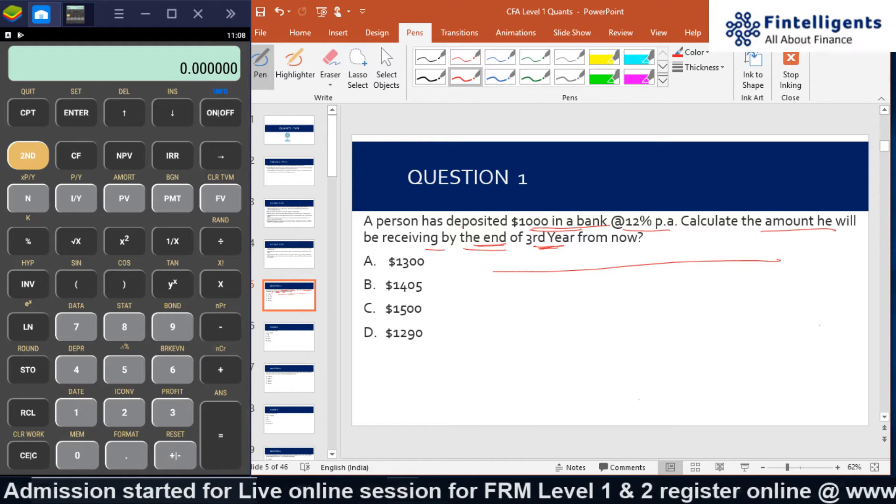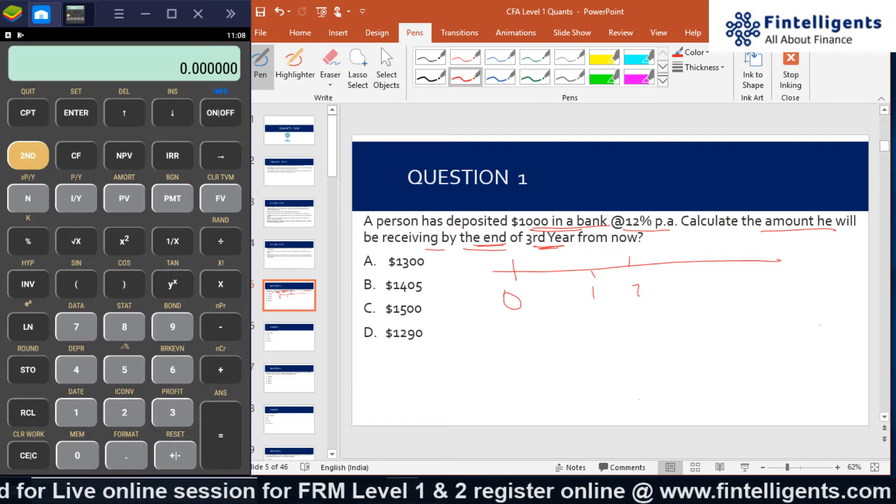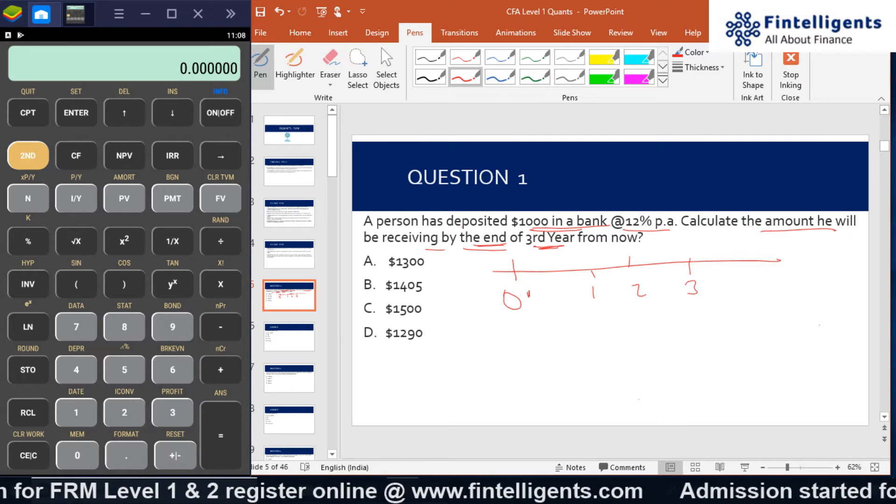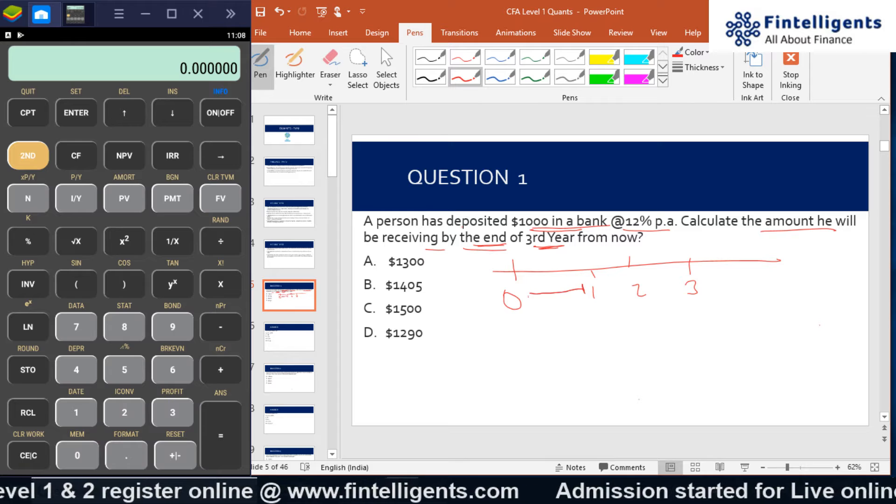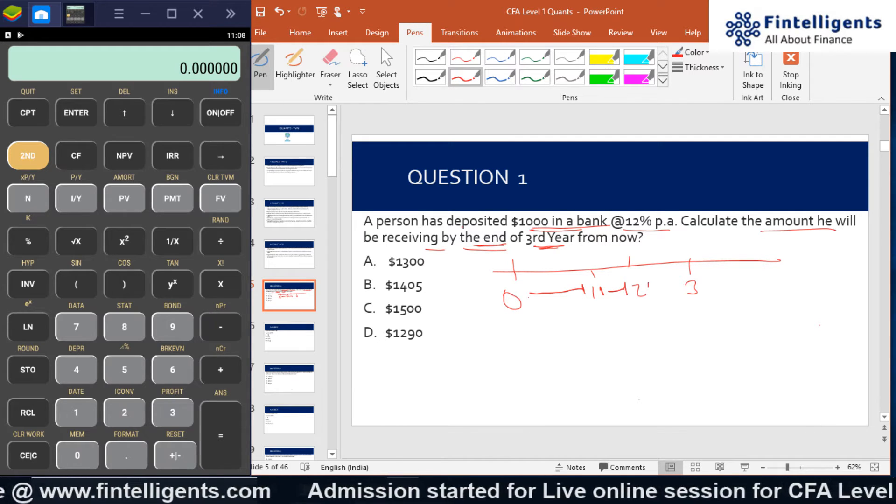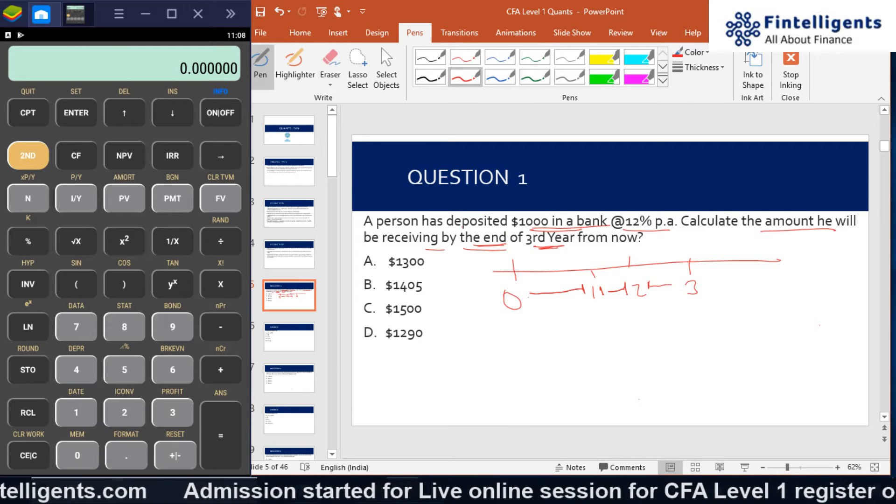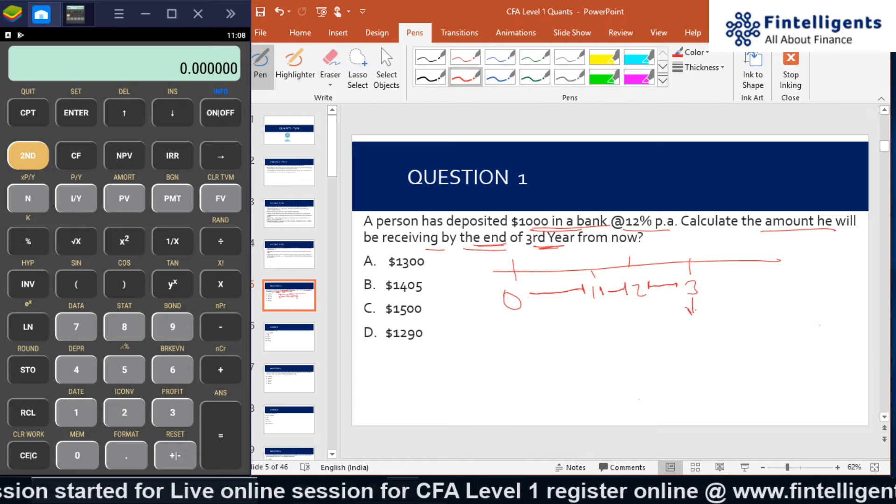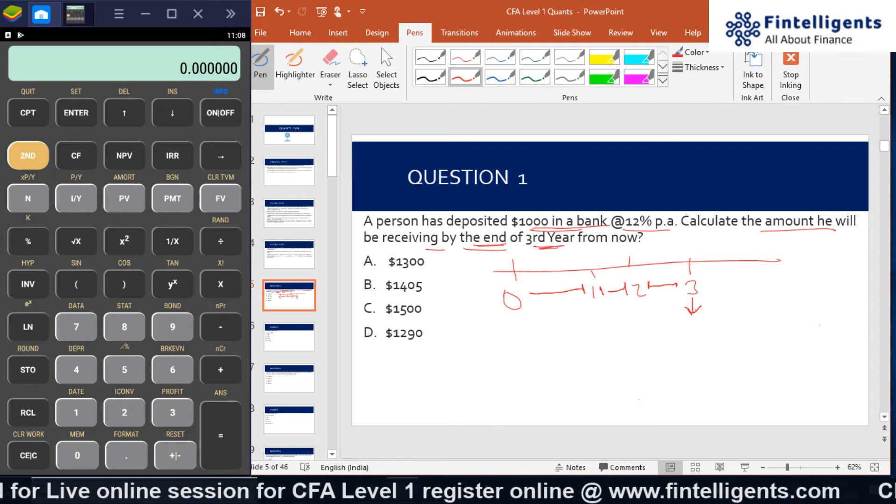That essentially means if I draw a timeline: 0, 1, 2, and 3. My first year will start here and end here, my second year will start here and end here, my third year will start here and end here. That means my end of the third year is actually here.